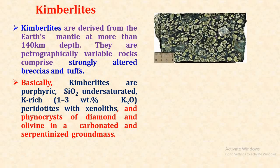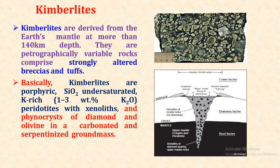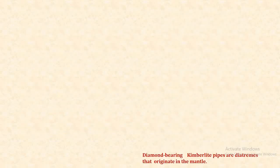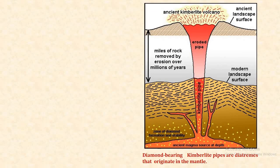This is a section of kimberlite in which the rock is seen to be rich in olivine minerals. These are the xenoliths of diamond in the diamond-bearing upper mantle rocks. This is the diamond pipe — diamond-bearing kimberlite pipes are diatremes that originate in the mantle.